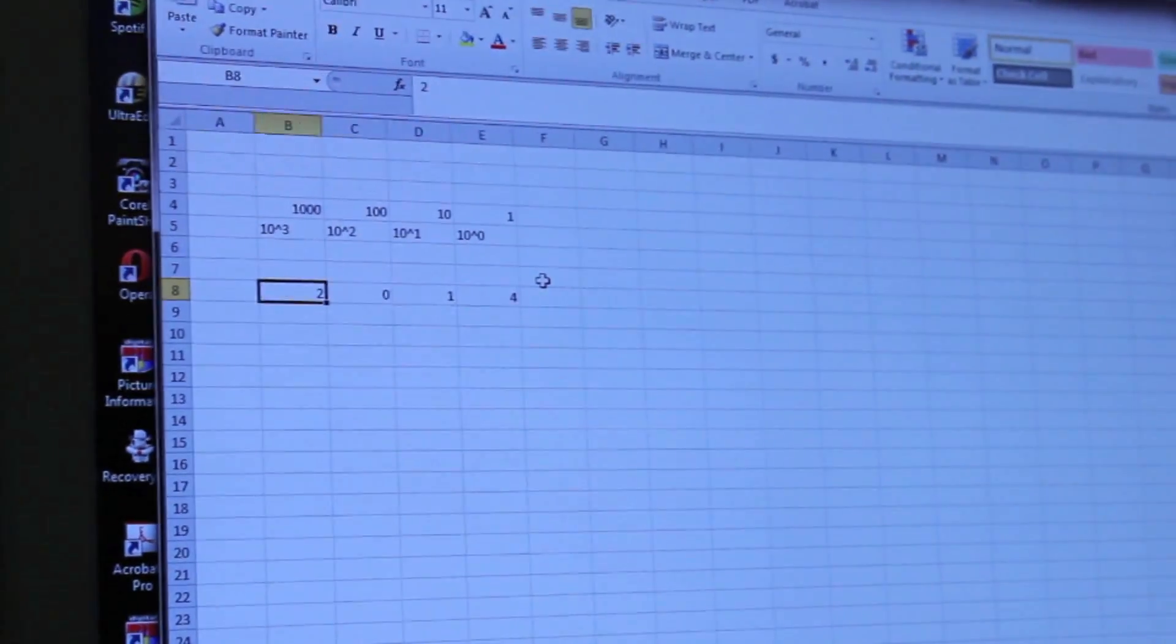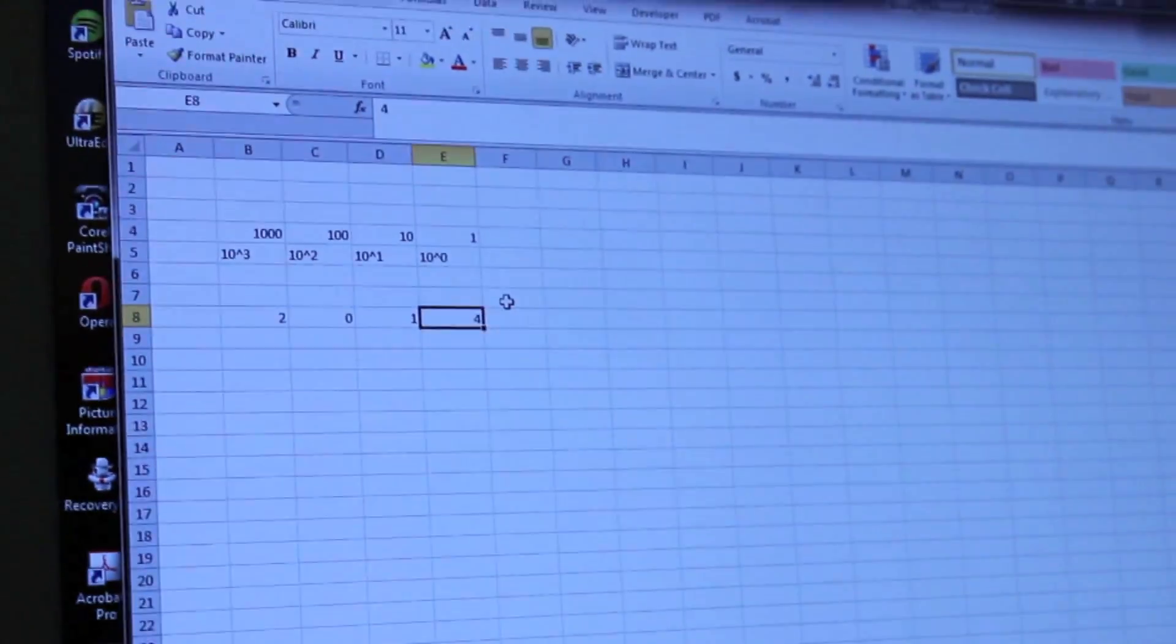You and I see this number, and we say that number is 2014. But what is it really? Two thousands, no hundreds, one ten, and four ones, which gives me 2014.